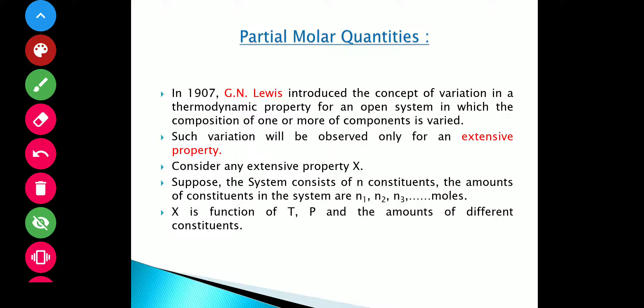Here we are talking about the open system. An open system is one which can exchange both matter and energy with the surroundings. The thermodynamic property whose variation is studied with respect to the change in composition will be an extensive property — one which depends upon the amount of substance present in the system. So here we are talking about the variation of an extensive property of an open system with the change in composition of one or more components.